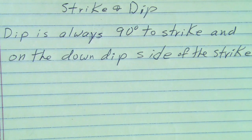Dip is always drawn at right angles, 90 degrees to the strike. And it's on the side of the strike symbol that's going down dip, down into the earth.